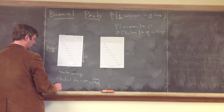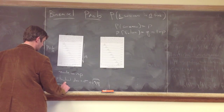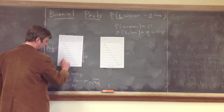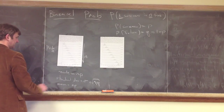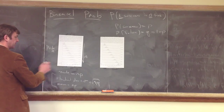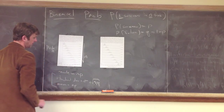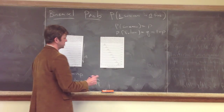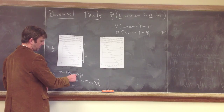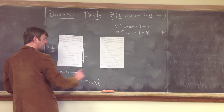Similar to the mode — and in this case identical to the mode — is the mean, which is another surrogate for the center, another idea of where this distribution is centered. In this case it is equal to np. So these two variables give the centering of this distribution and its width. When n is large, it's farther out, and if p is closer to 1, it's also going to be farther out.